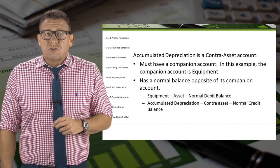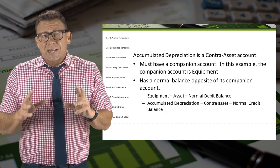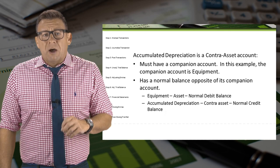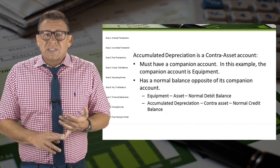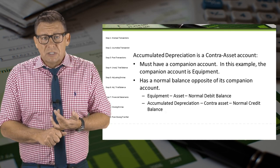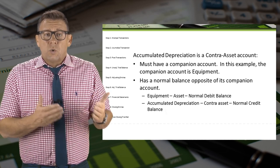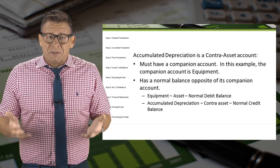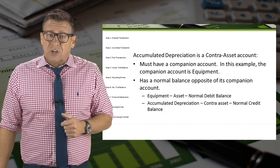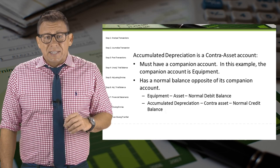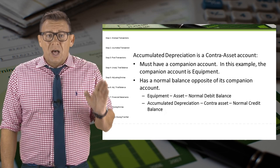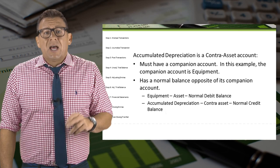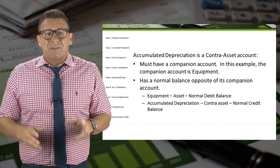This won't be the only contra-account you learn, so let's define what makes an account contra. A contra-account must meet two criteria. The first is that it must have a companion account — in this example, the companion account is equipment. If we never owned any equipment, we would never have an account called accumulated depreciation for equipment. The second is that it has a normal balance opposite its companion account. Since equipment has a normal debit balance, accumulated depreciation must have a credit balance.